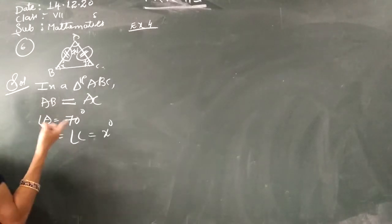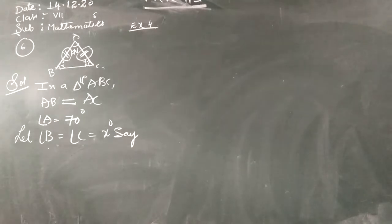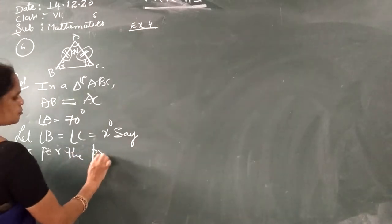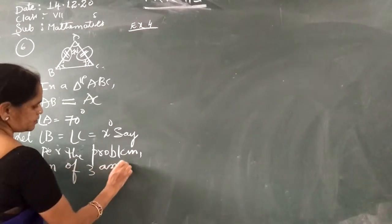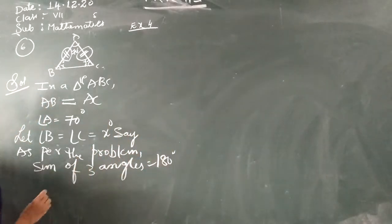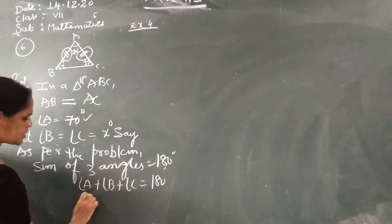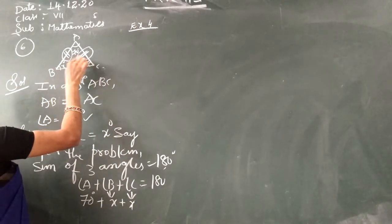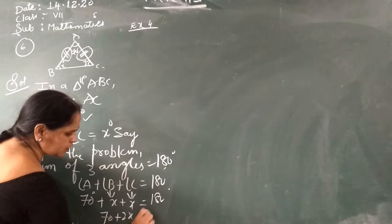Since AB equals AC, angle B is equal to angle C, and both equal X. You have to use the angle sum property. As per the problem, the sum of 3 angles is equal to 180 degrees. So angle A plus angle B plus angle C equals 180 degrees. Angle A is 70 degrees, angle B is X, angle C is also X, and Y is also X by the same symbol. So this gives 70 plus X plus X equals 180 degrees.